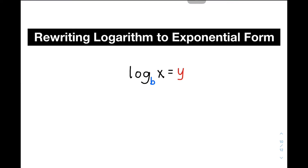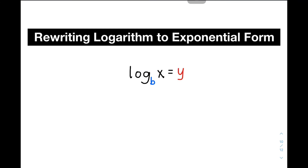Now we have here the general equation of a logarithmic equation. We have logarithm of x to the base of b is equal to y. What is the equivalent exponential form of this equation? We can convert it this way: b raised to y is equal to x.